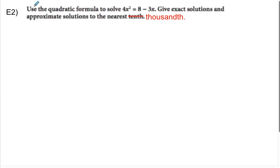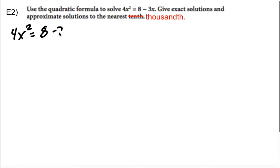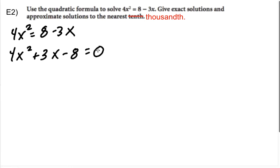Now we're going to use the quadratic formula to solve this one, giving exact solutions with square roots and approximate answers to the thousandth — because that's what the AP wants, not the tenth like the textbook suggests. What's tricky here is you can't use the quadratic formula in the form it's currently in. You need to move everyone to one side. I like my leading coefficient to be positive, so moving everything to the left gives a = 4, b = 3, and c = -8.